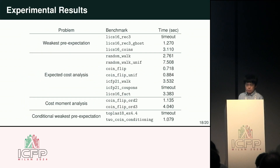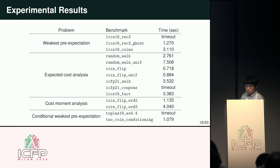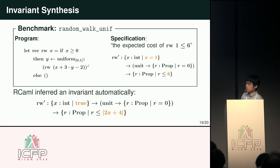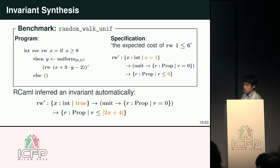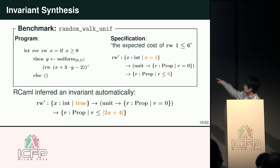We conducted experiments using our implementation, collecting benchmarks from existing literature ranging over several kinds of problems. Our implementation was able to solve many of these benchmarks. One benchmark contains the random walk program shown at the beginning of this talk. For each benchmark, specifications are given only for top-level functions, meaning our implementation must infer internal invariants automatically. For example, the specification is given only for the case where x is 1, but our implementation was able to infer an invariant defined for arbitrary x.